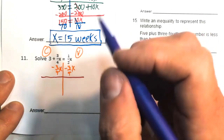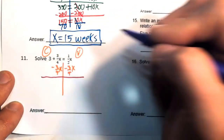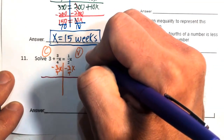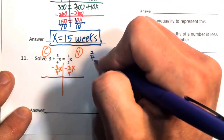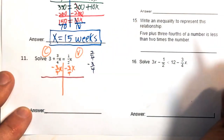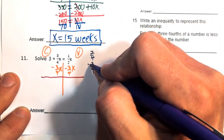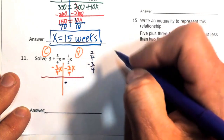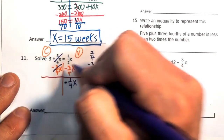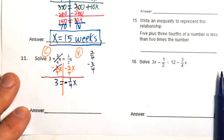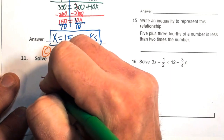We need a common denominator for halves and fourths, which is 4. One-half equals two-fourths. So two-fourths x plus negative three-fourths x: opposite signs, subtract, take the sign of the larger. Three-fourths is larger, so the result is negative one-fourth x. The left side gives zero plus 3, which is 3.